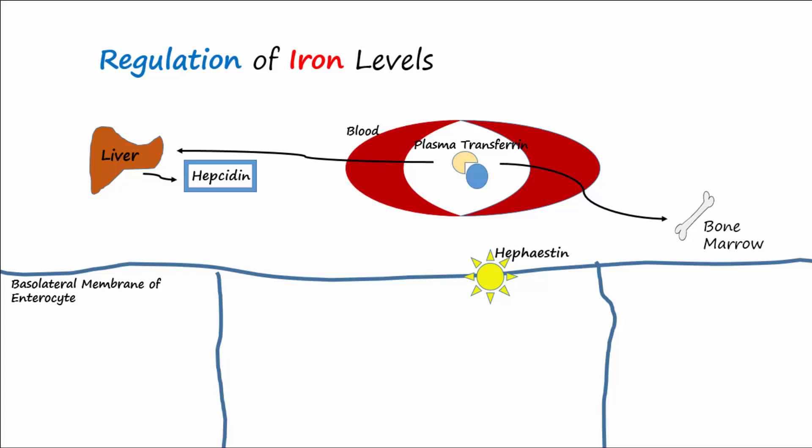Hepcidin acts to down-regulate the levels of ferroportin-1 in enterocytes and macrophages. Without ferroportin-1, iron stays inside the cells instead of entering the blood.